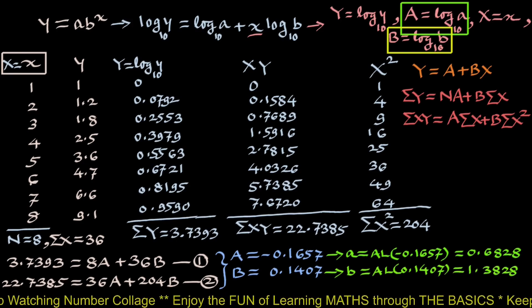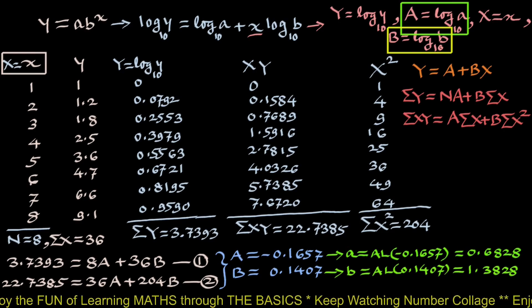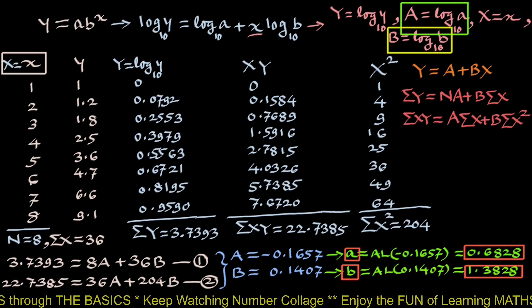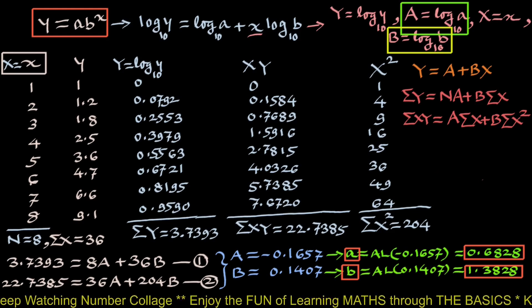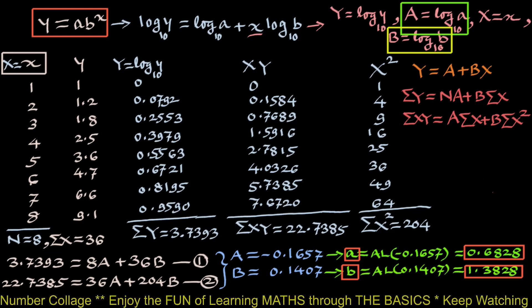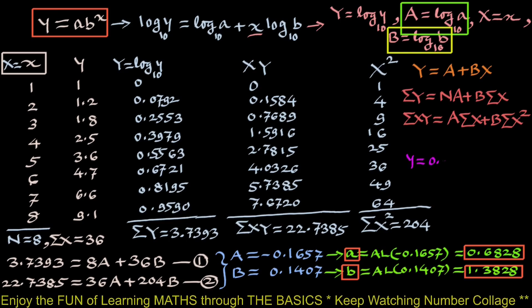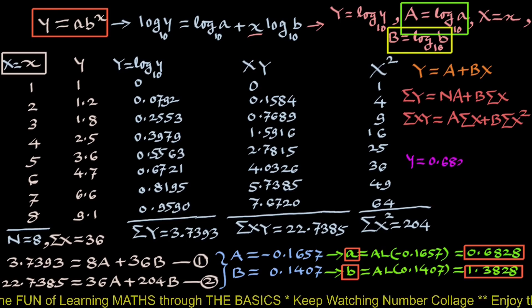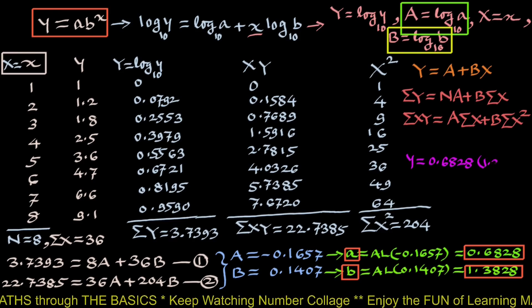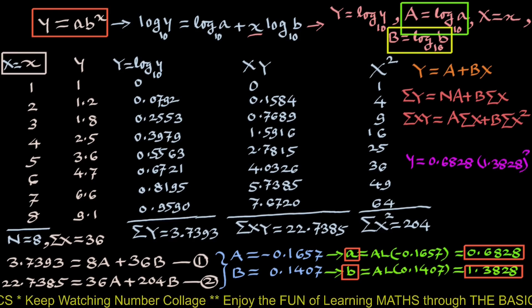Now we substitute values of A and B in this exponential form and write the equation of the exponential curve of best fit as y equals 0.6828 into 1.3828 to the power x.